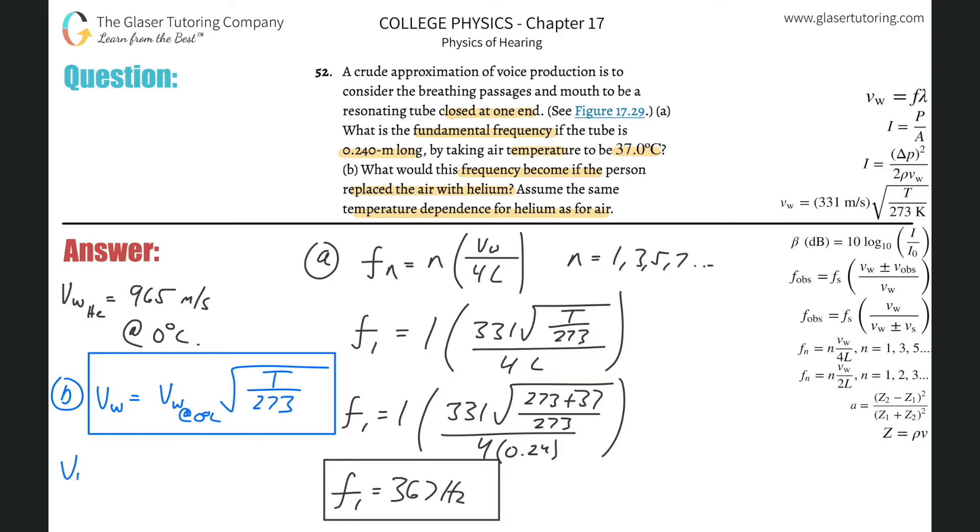So basically the velocity of the sound in helium will be equal to 965 multiplied by the square root of that Kelvin temperature. So there's 273 plus 37, all divided by 273. Let's get a value here. So the velocity of sound in helium is going to be 965 times the square root of 273 plus 37, all divided by 273. So the speed of sound is going to be 1028, and that's in meters per second. So now this is the value we're going to use when we plug it into our formula.